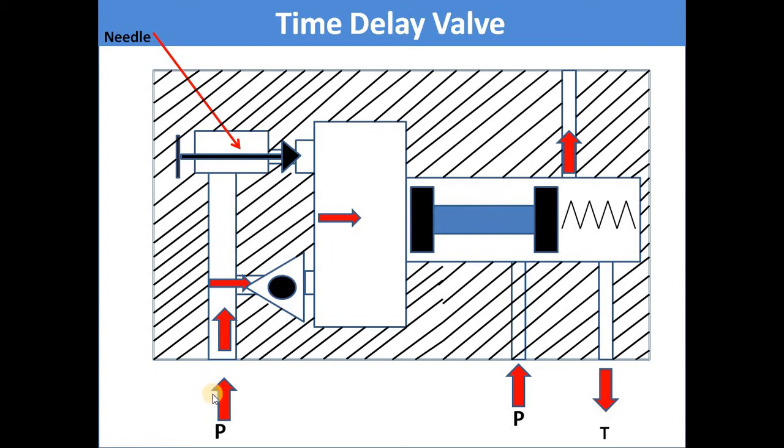The medium comes from this side, goes to the check valve, and at the same time goes through the flow control valve. It accumulates in the reservoir. When the reservoir builds sufficient pressure, it applies pressure on the spool. The spool shifts towards the right side.